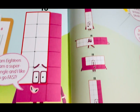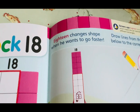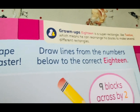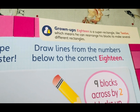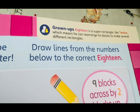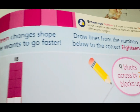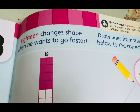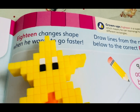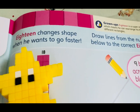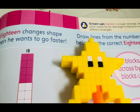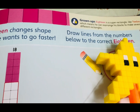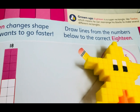Are you ready for another activity? It says here, grown-ups: 18 is a super rectangle like 12, which means he can rearrange his blocks to make several different rectangles. 18 changes shape when he wants to go faster.